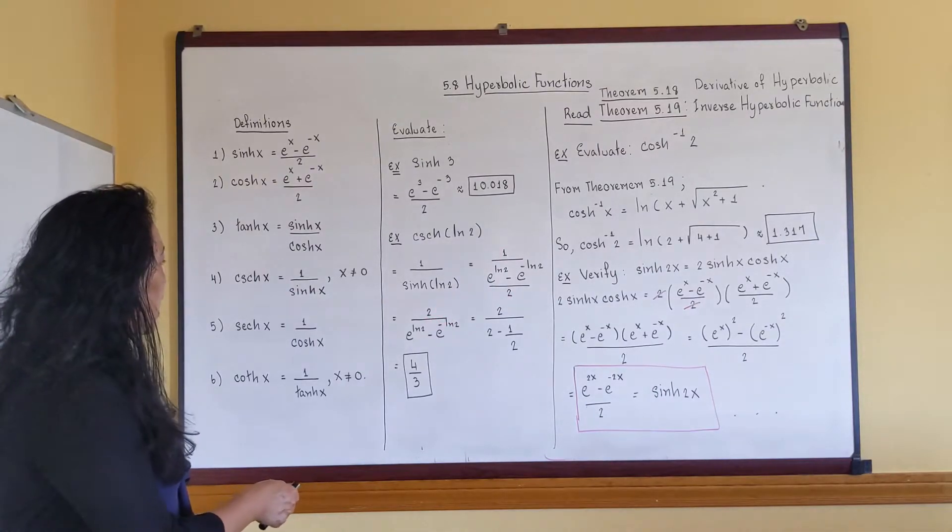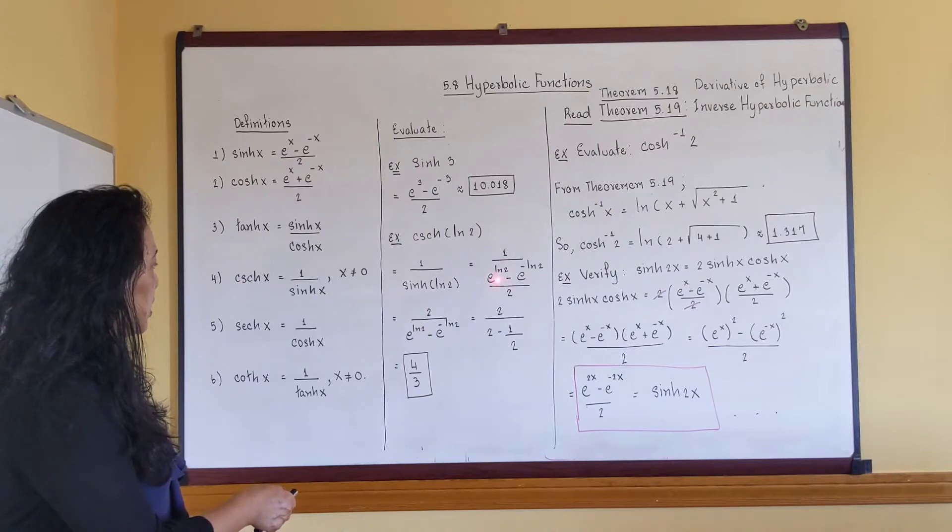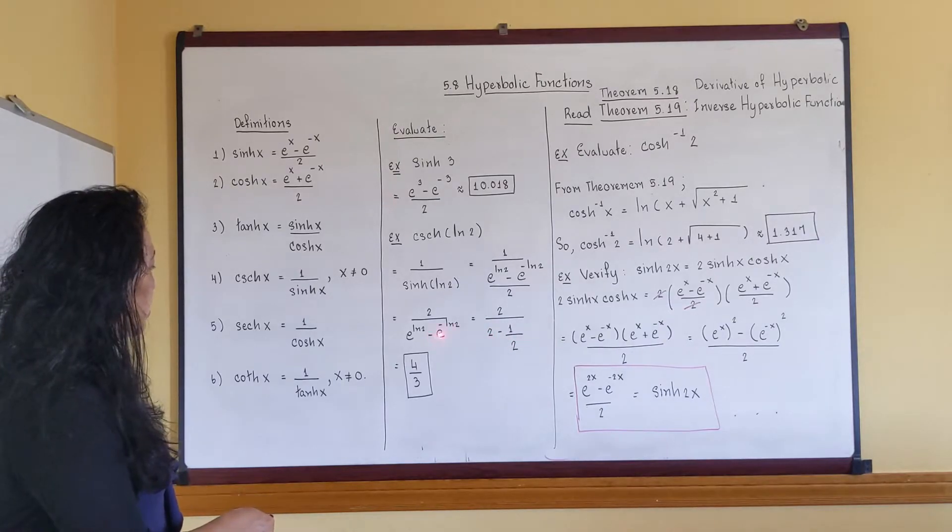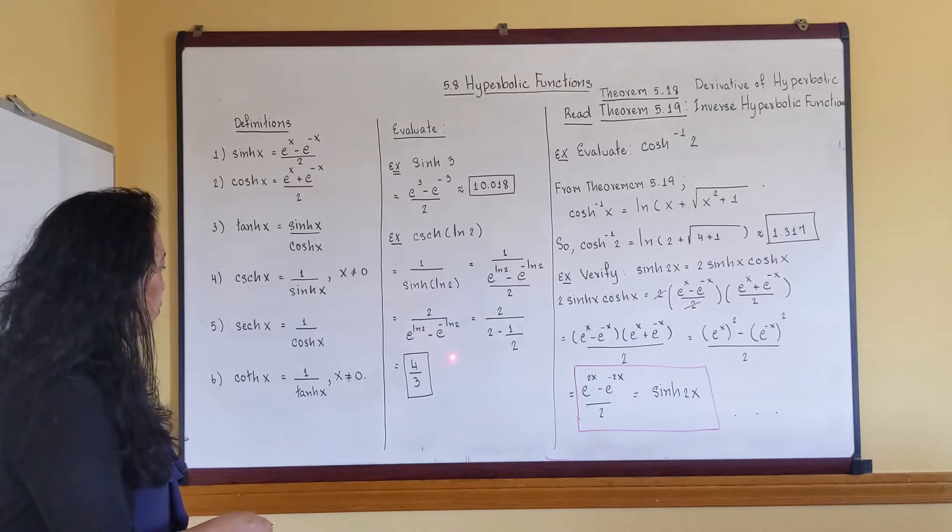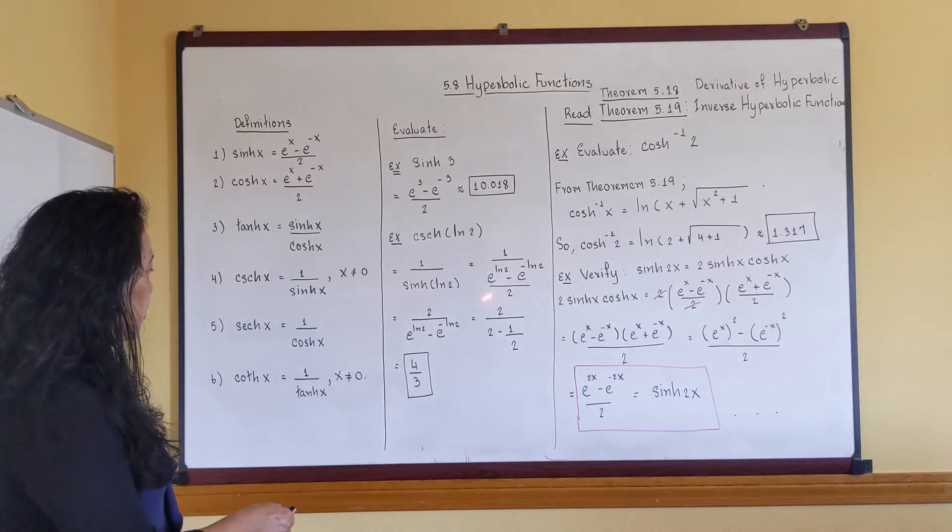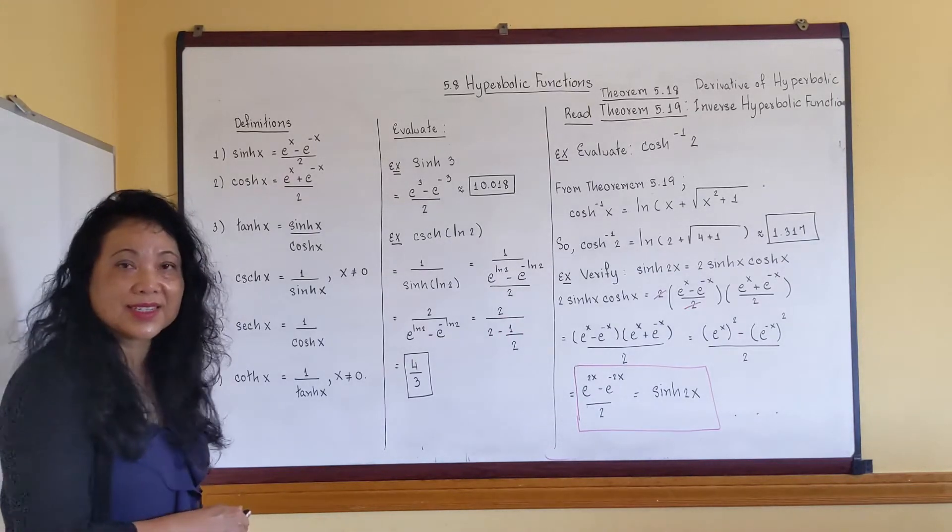Now e to the ln 2 is the same thing as e log base e of 2, so it's equal to 2. And then e to the negative ln 2 is just 1 over e to the ln 2, which is 1 half. If you solve this you get 4 over 3. It's pretty straightforward, right?